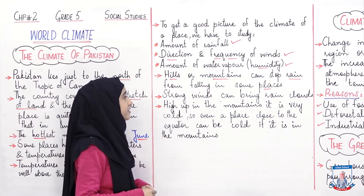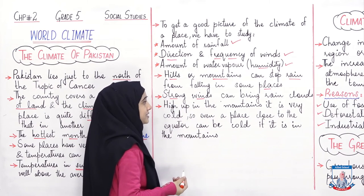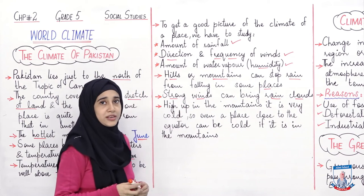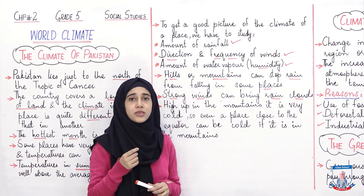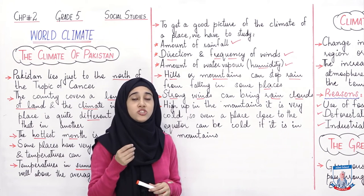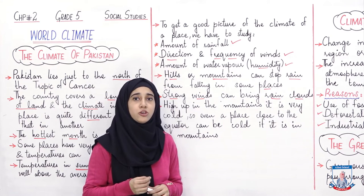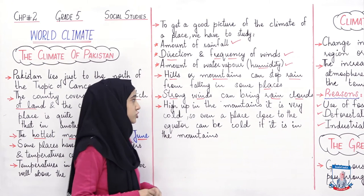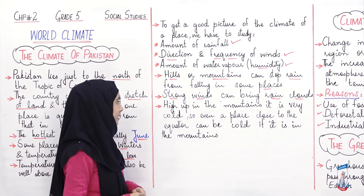Strong winds can bring rain clouds. If there are strong winds, they can bring rain clouds with them, meaning the amount of water vapors is very high. High up in the mountains it is very cold, so even a place close to the equator can be cold if it is in the mountains.